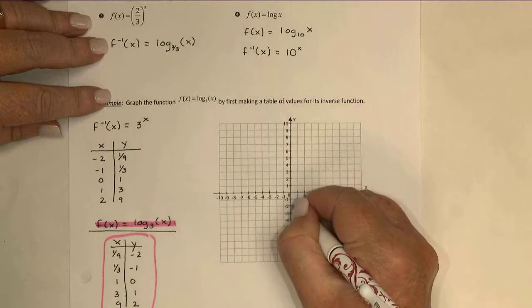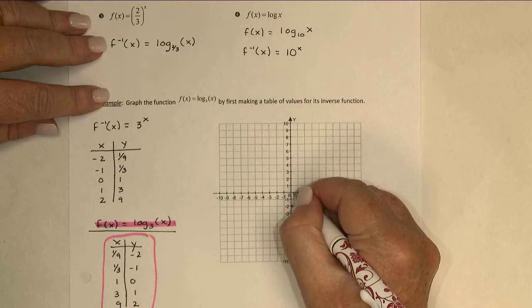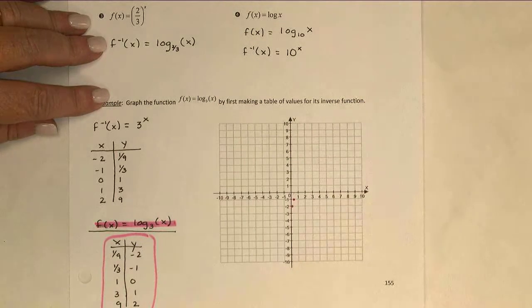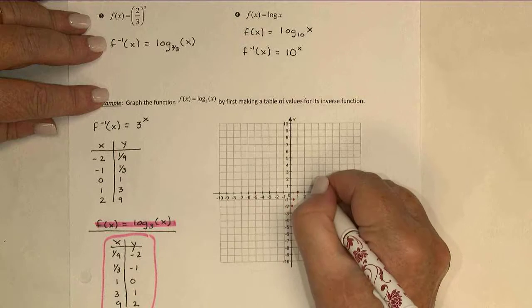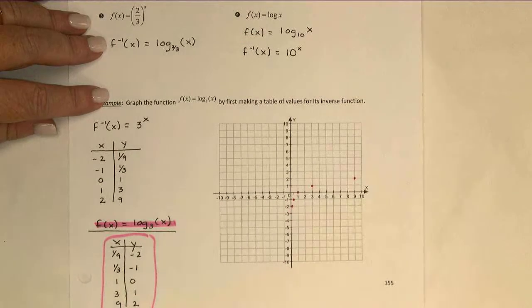So let's do that. 1 ninth negative 2, we're really close to the y-axis there. 1 third negative 1, maybe about here. 1, 0, 3, 1, 9, 2.